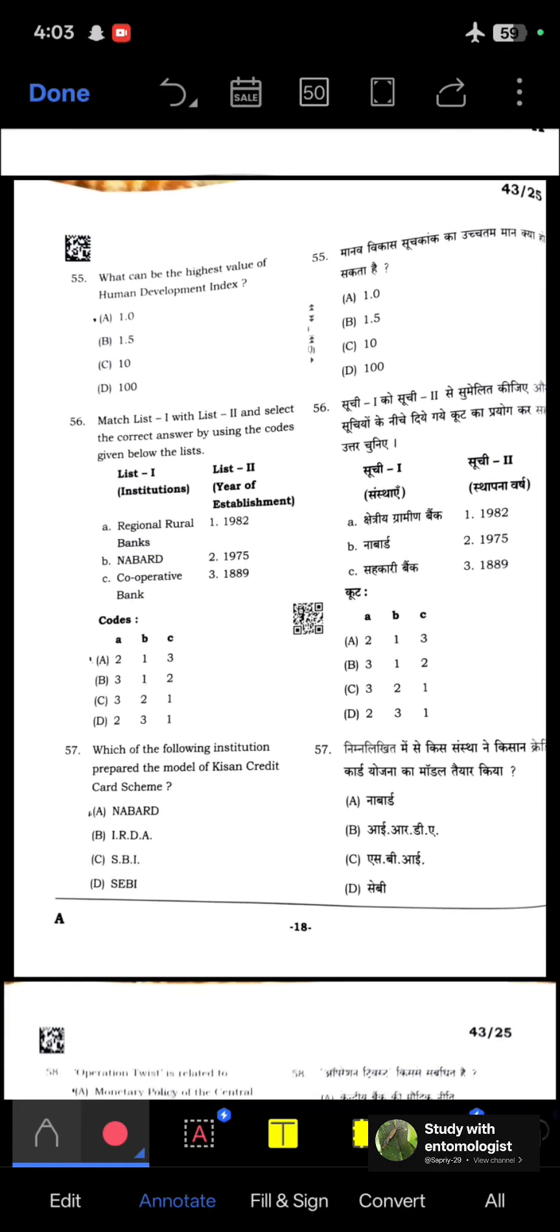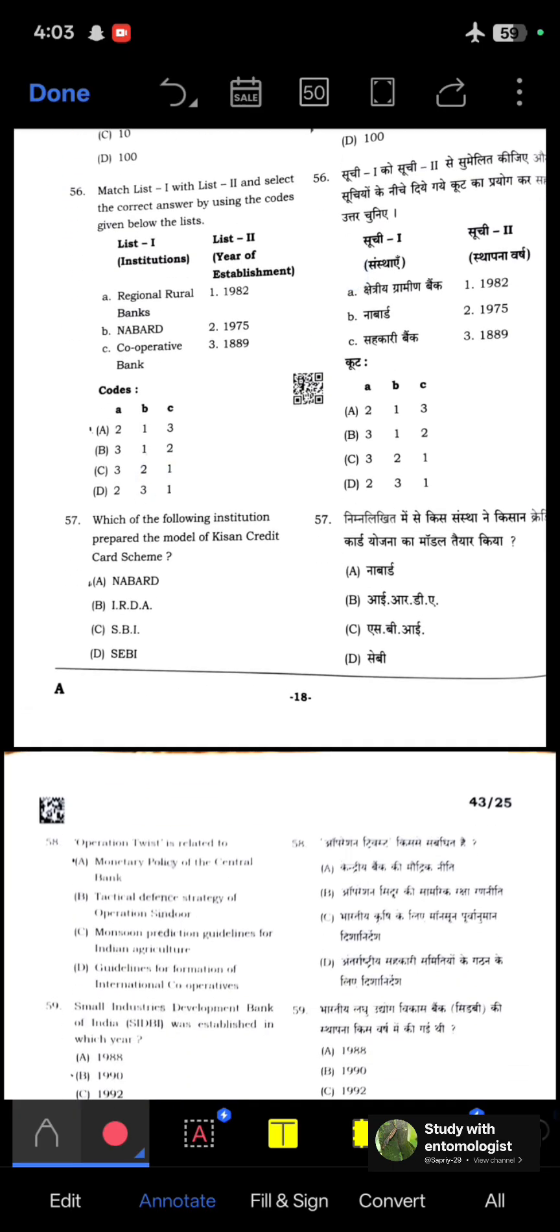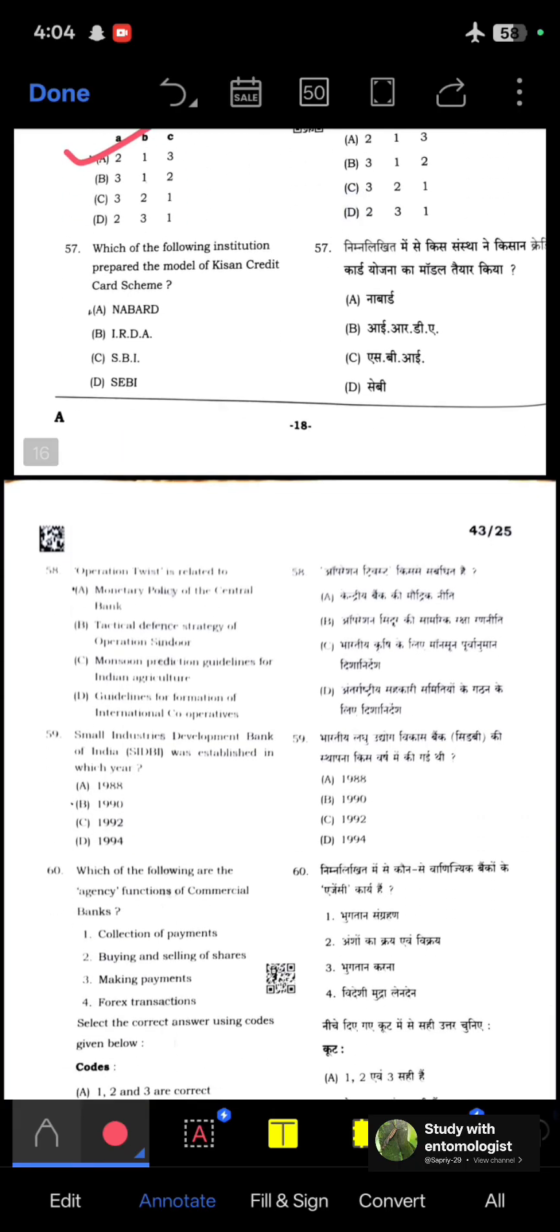What can be the highest value of Human Development Index? Answer will be 1. Match list one with list two and select the correct answer. List one is institutions, list two is year of establishment. Regional Rural Bank established in 1975, NABARD establishment year is 1982, and cooperatives established in 1889. Option D is correct.